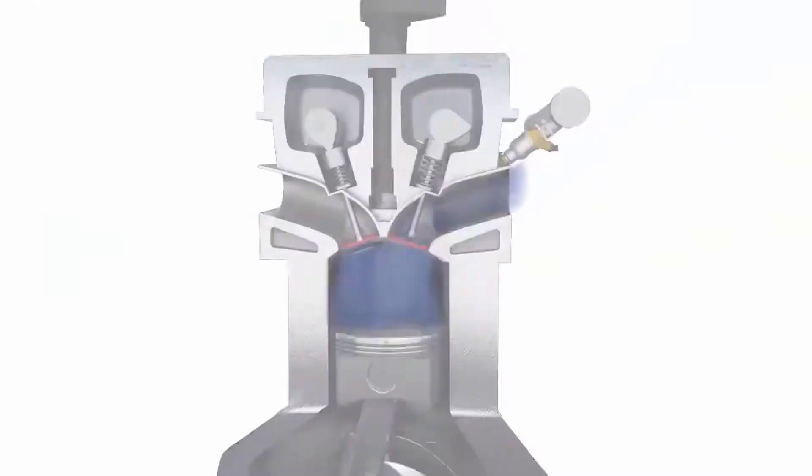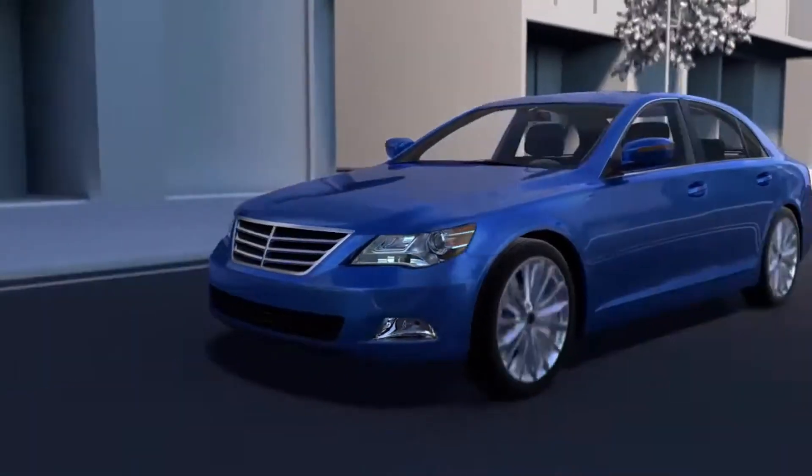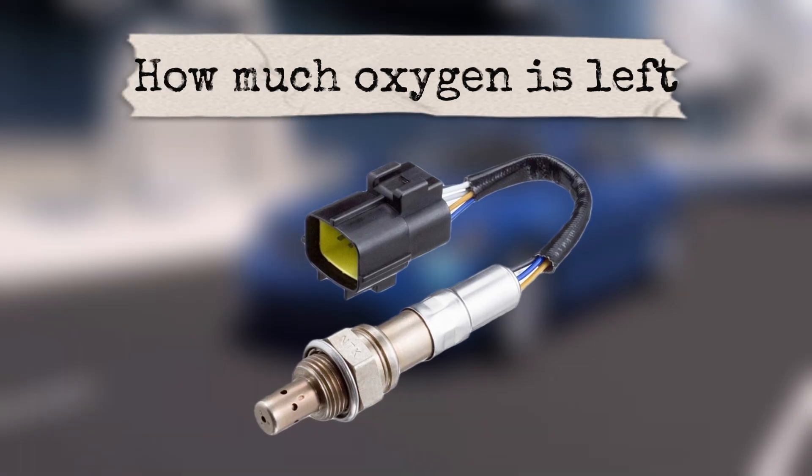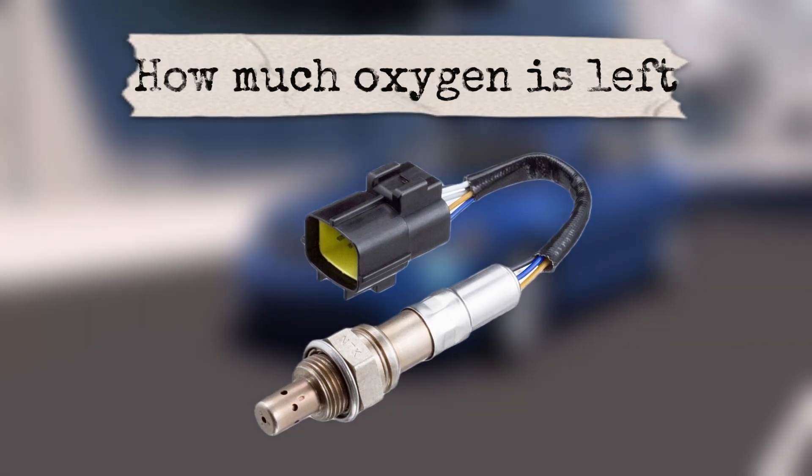Now, let's dive even deeper. Fuel injection systems also make emissions control possible. Remember those oxygen sensors I mentioned? They measure how much oxygen is left in the exhaust gases, sending feedback to the ECU.